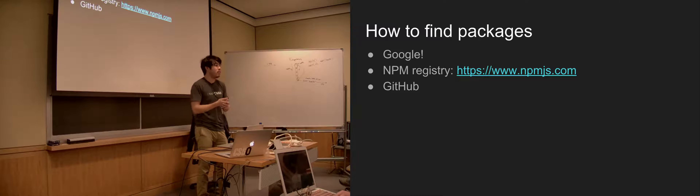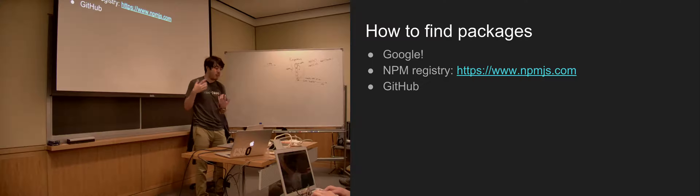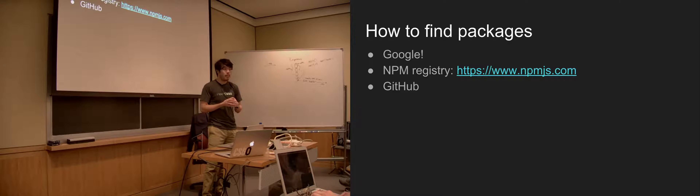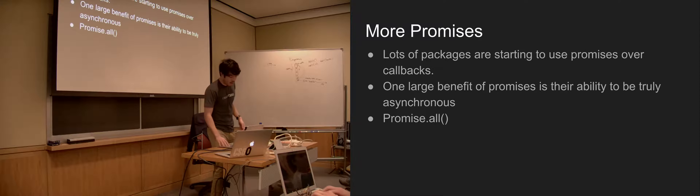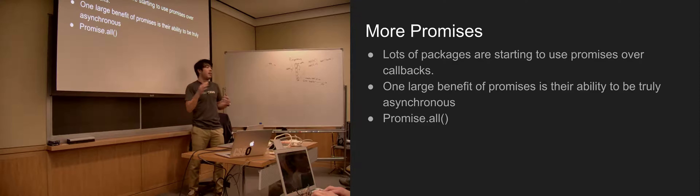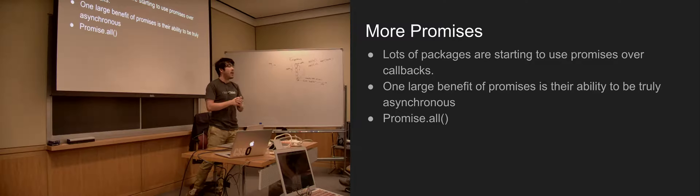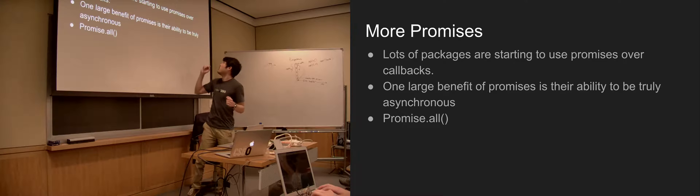So how do we find these packages? Turn to Google. If you want to know how to send mail from a node server, a quick Google search and you'll find it. Also within the NPM registry at npmjs.com, they have a list of all of the NPM modules. And then also you can turn to GitHub. So how do we start using these packages? What if a lot of them use new cutting-edge features like promises? We talked a bit about promises a few days ago. There's something that sets them apart from callbacks, and the large benefit is their ability to be truly asynchronous.